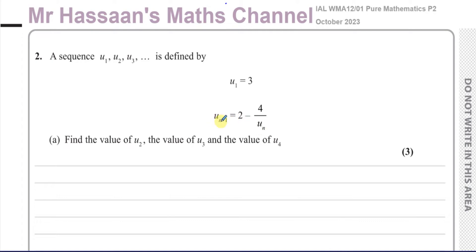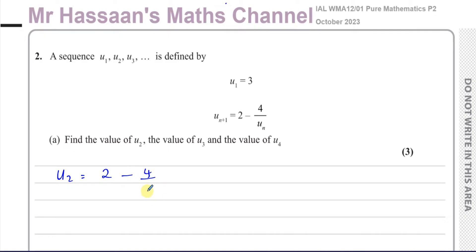U_{n+1} means to get to the next term you have to follow this formula — you do 2 minus 4 over the term before it. So we want to find what u2, u3, and u4 are. They've told us what u1 is, and they've told us what u_{n+1} is. So to find the second term, you do 2 minus 4 over the first term.